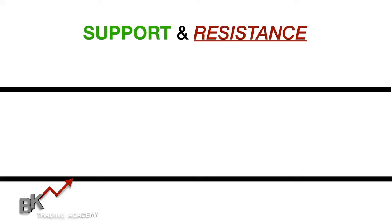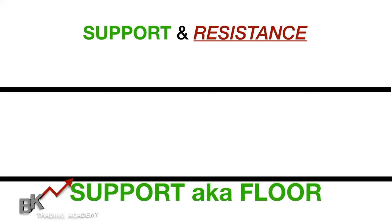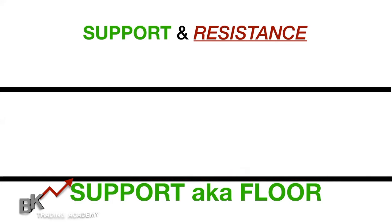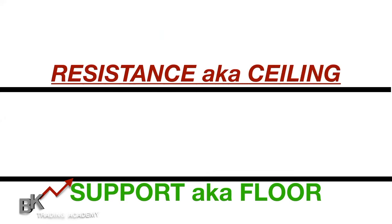That leads me to support and resistance. Support — also known as the floor — is the bottom line. Think of support as holding something up, like crutches. Resistance is the top, known as the ceiling, which price bounces off of. Whenever price goes up, you expect it to move down when it hits resistance; whenever it hits support, you expect it to move up.